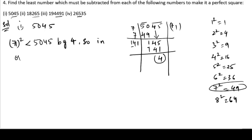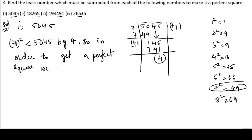In order to get a perfect square, we need to subtract 4 from 5045.